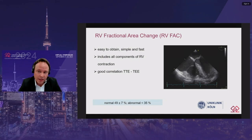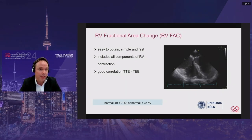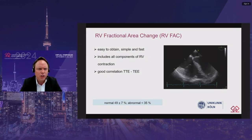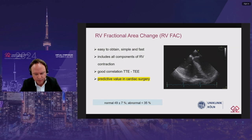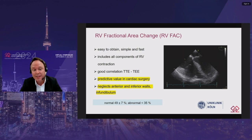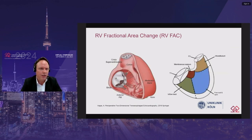Another very interesting and useful parameter in the perioperative setting is fractional area change. It's easy to obtain and includes all components of right ventricular contraction. There is a good correlation between transthoracic and transesophageal assessment, and it has predictive value in cardiac surgery. However, it neglects the anterior and inferior walls as well as the infundibulum. Remember, the right ventricle is more than just the inflow tract and apex — including cross-sectional views improves the evaluation of right ventricular function.